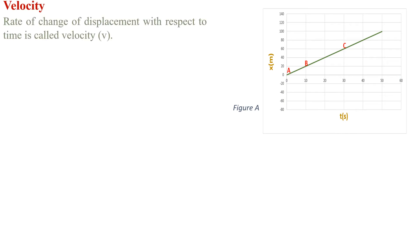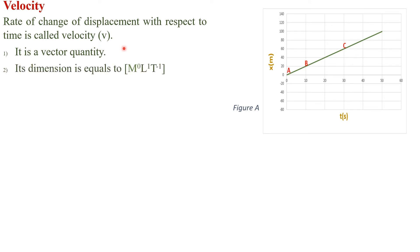Velocity: the rate of change of displacement with respect to time is called velocity. It is the same as speed, but we use the term displacement instead of distance, so velocity becomes a vector quantity. Its dimensional formula is M⁰L¹T⁻¹, and its SI unit is meter per second.